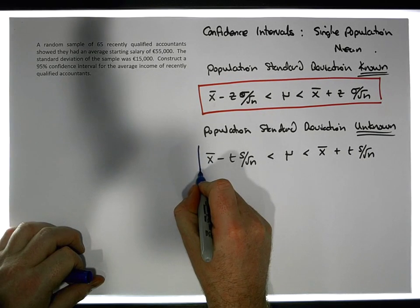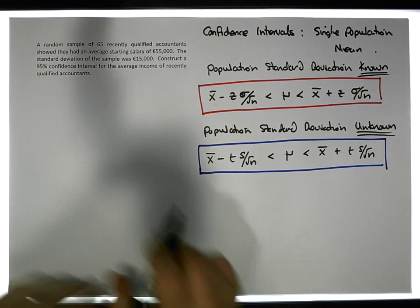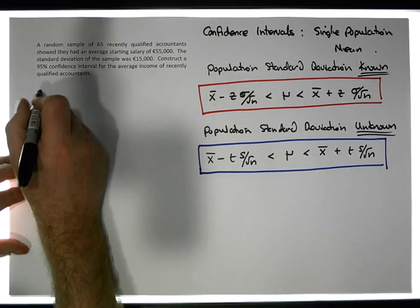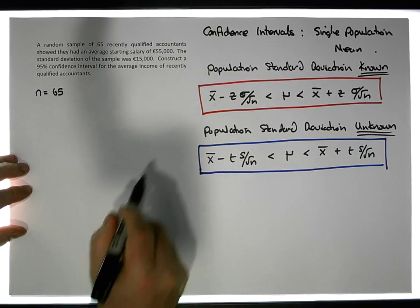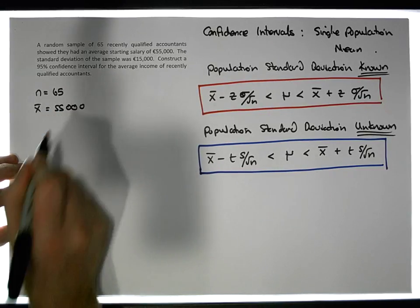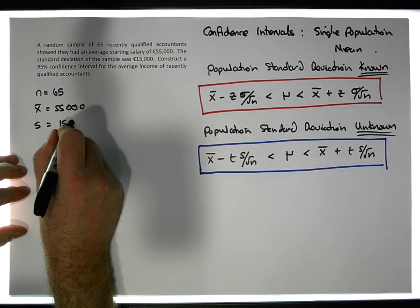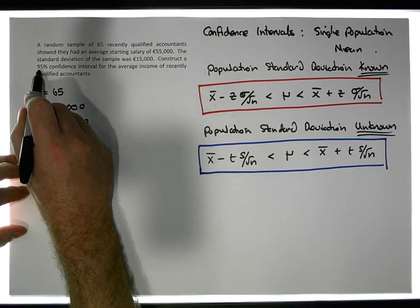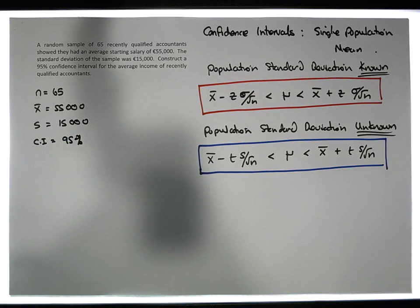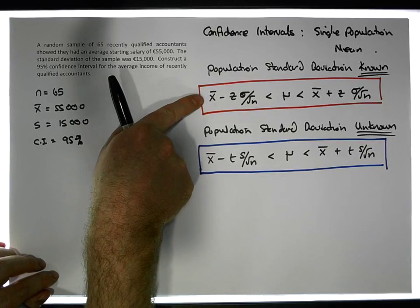This is the formula we're going to rely upon in this particular scenario. Let's extract all the information: the sample size n is equal to 65, the sample mean x̄ is equal to €55,000, and the sample standard deviation s is equal to €15,000. We need to construct a 95% confidence interval.